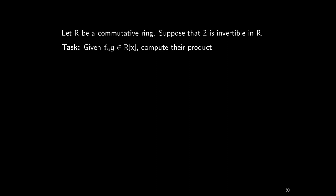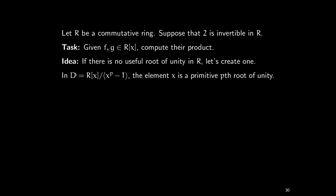The task is: given two polynomials with coefficients in r, compute the product. The idea is to create a root of unity and apply the idea from last time. Here is a ring which contains the root of unity: I take the polynomial ring where F and G live and take it mod x^p minus 1 for a certain p. This gives a new ring D, which is a ring extension of r where x is a primitive pth root of unity — obviously, because x^p equals 1. This means x is a primitive pth root of unity.